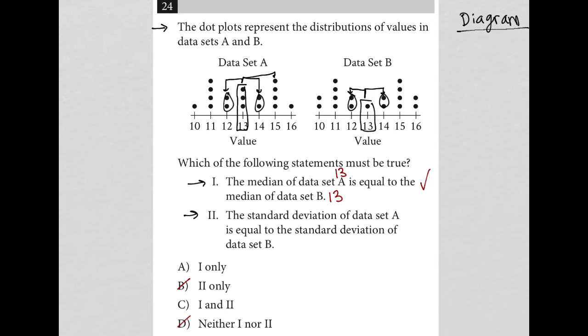And then two units away, we have four data points for data set A, and the exact same thing for data set B, four data points that are two units away, either to the left or to the right of the median. For data set A, three units away, we have just one data point.